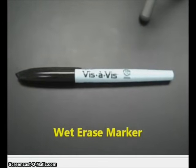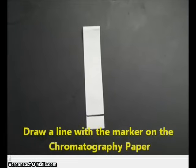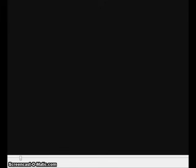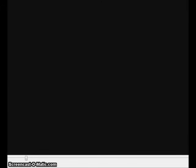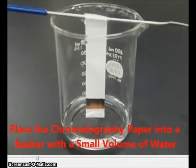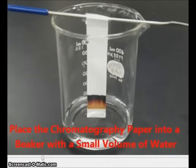So a vis-a-vis marker is wet erase, which means that the pigments are water soluble. We'll start our experiment by drawing a line with the marker on the chromatography paper. Then what we want to do is insert that chromatography paper into a beaker with a small volume of water in it.